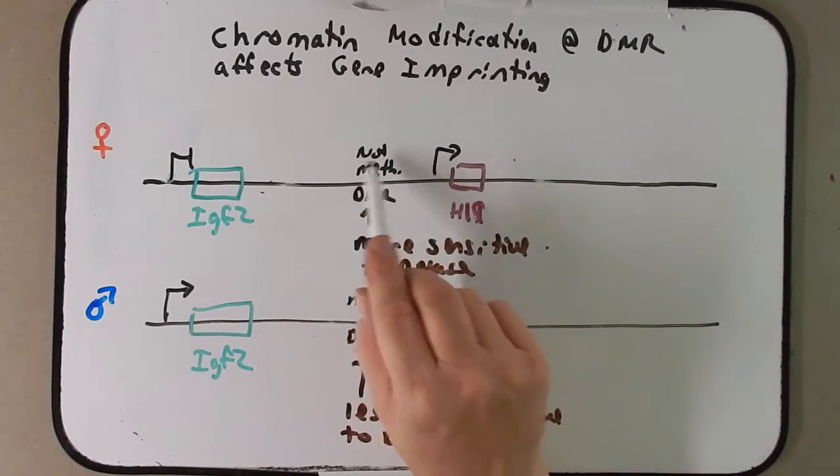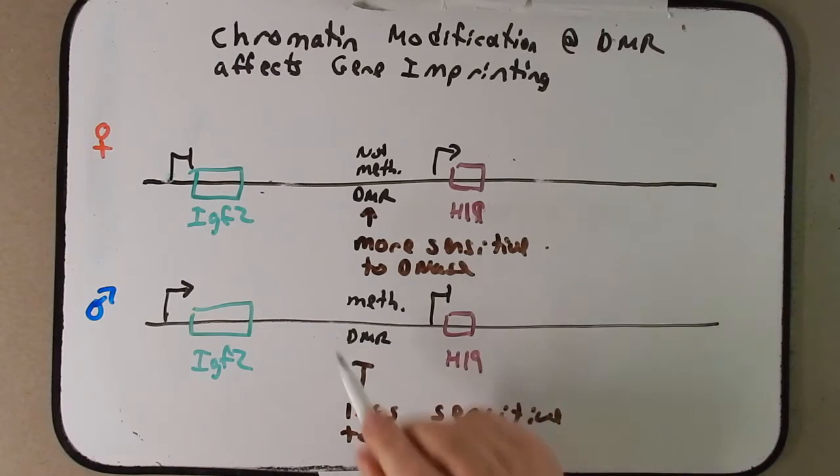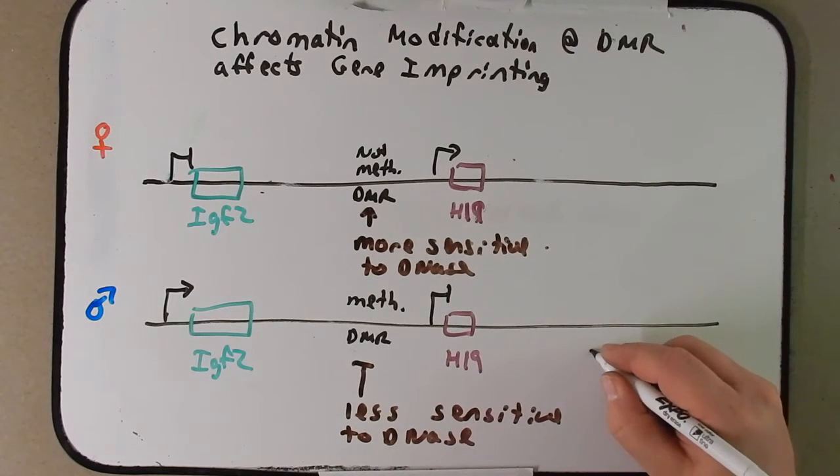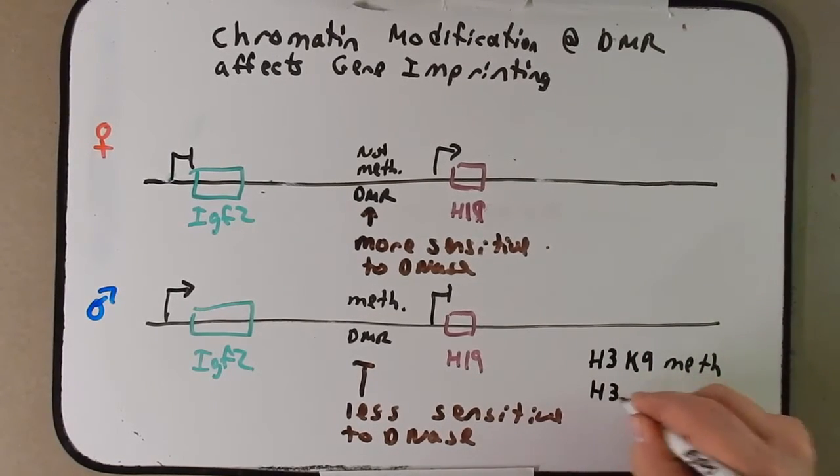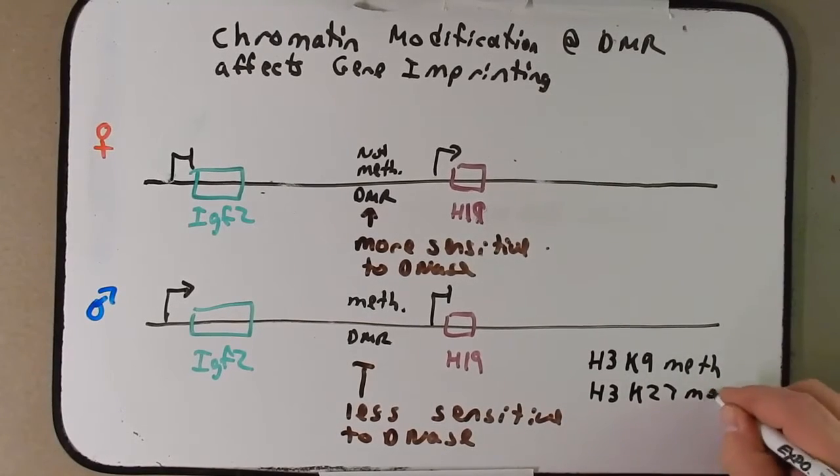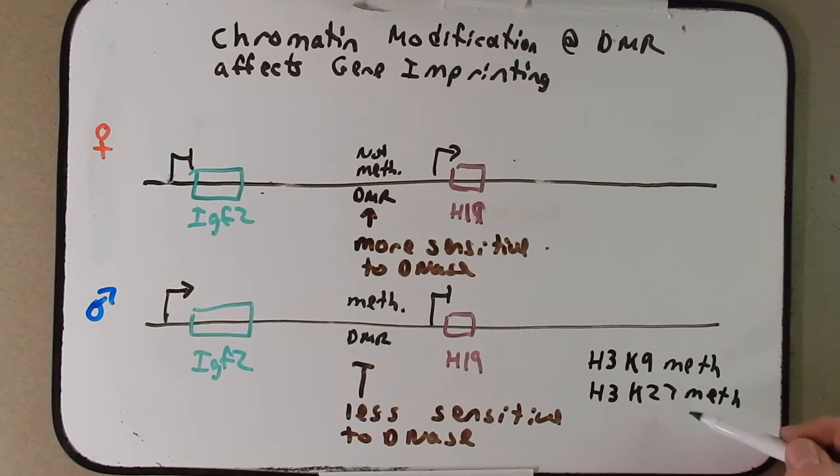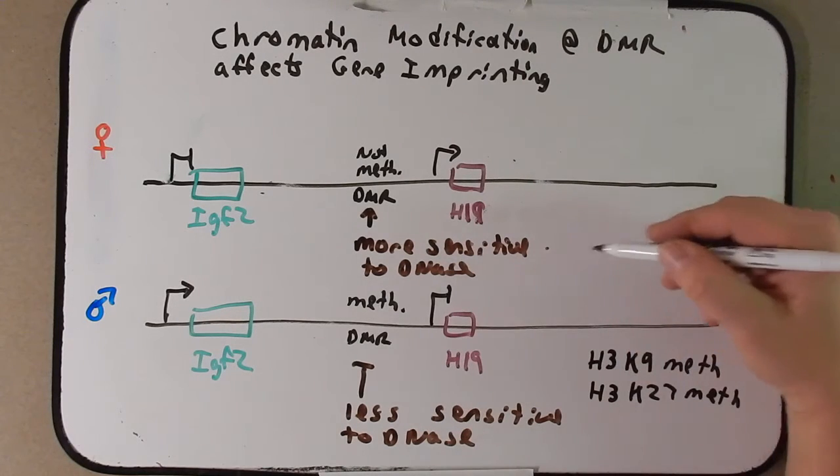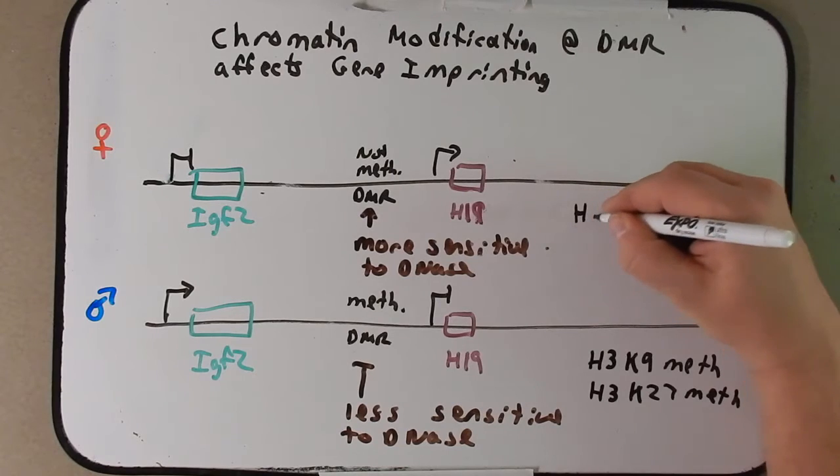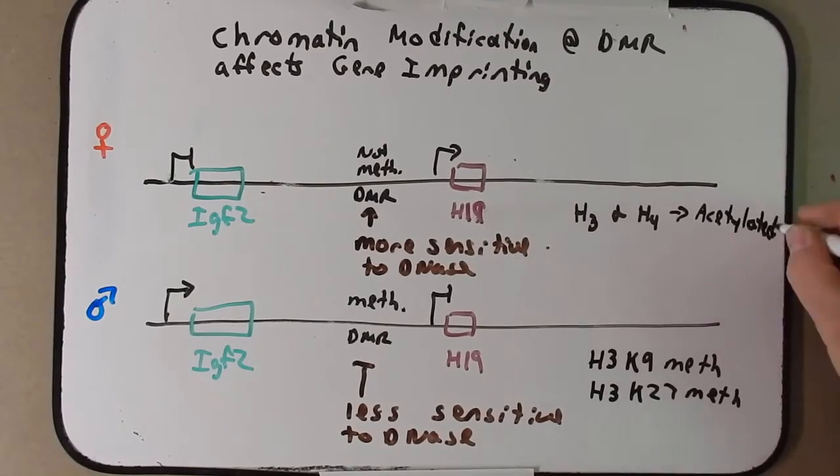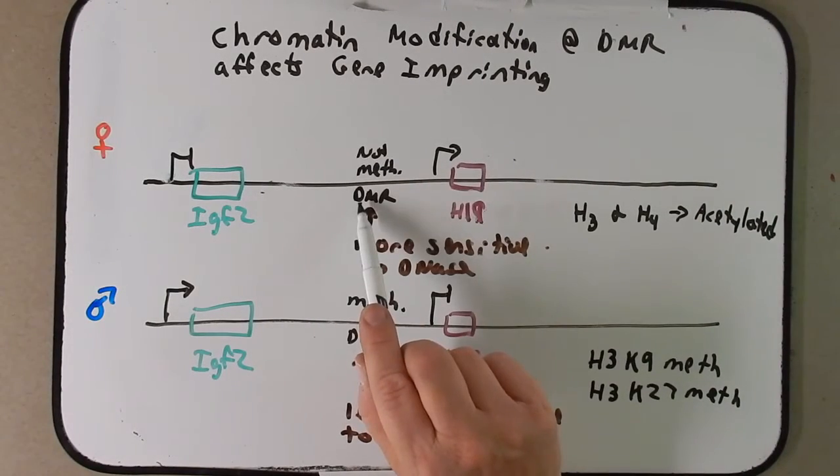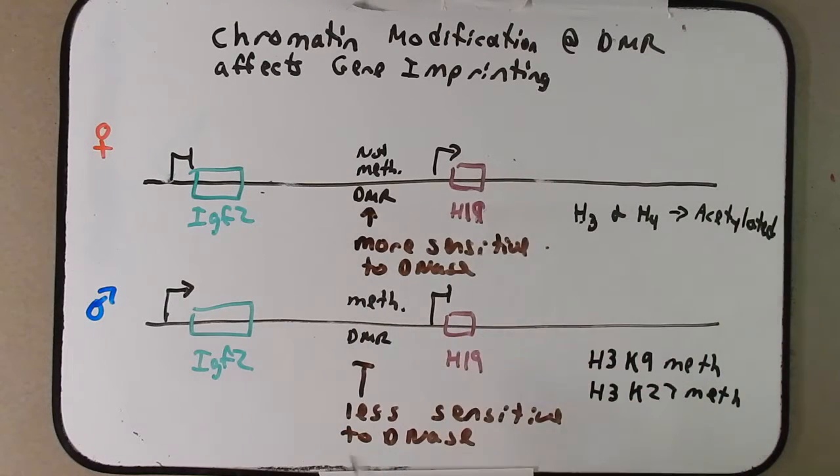The paternal copy here, the histones in this region contain H3K9 methylation and H3K27 methylation. Remember, this methylation at these positions are known to prevent expression of associated genes. In this case, H19. Up here, the maternal copy, the H3 and H4 are heavily acetylated, which is linked to expression of genes associated with the H3, H4 acetylation. In this case, H19.